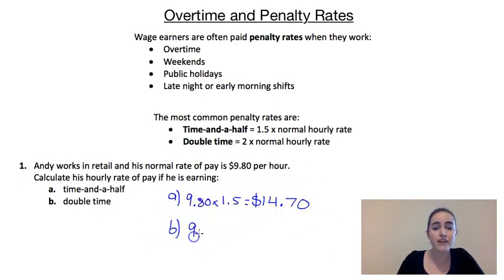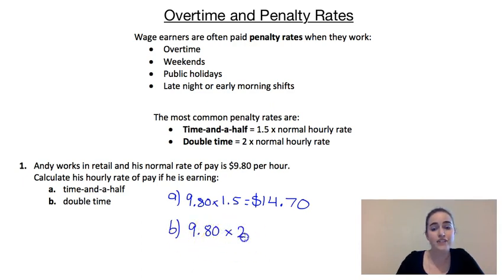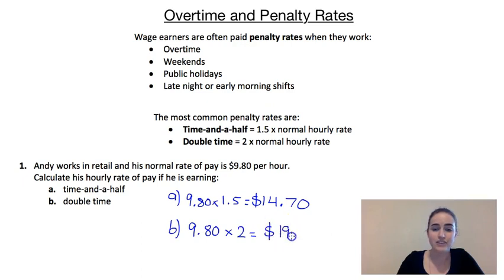For part B, if he's getting paid double time, we take our normal hourly rate of pay and multiply it by two, so he'd be getting $19.60 per hour instead.